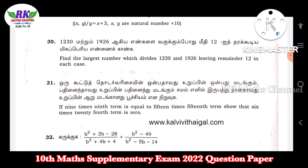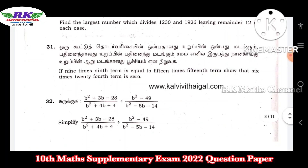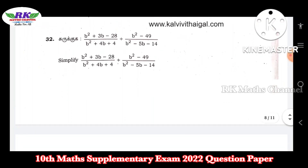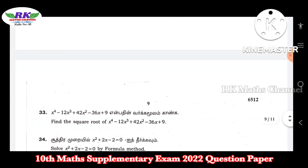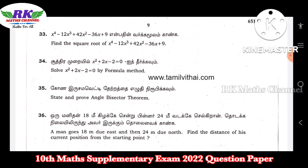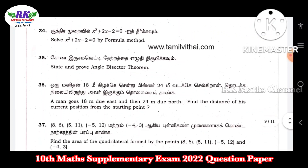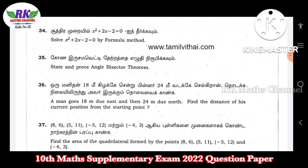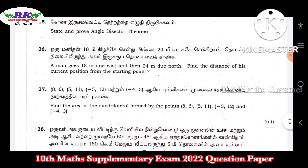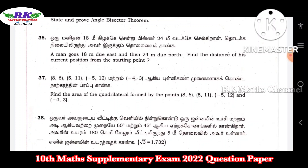Question number 30: find the largest number which divides 1,230 and 1,926 leaving remainder 12 in each case — this is an important question. Question number 31: arithmetic progression, exercise-level problem — important. Question number 32: division of rational expressions. Question number 33: square root. Question number 34: equation using the formula method — quadratic formula, minus b plus or minus root b squared minus 4ac divided by 2a. Question number 35: angle bisector theorem — state and prove.